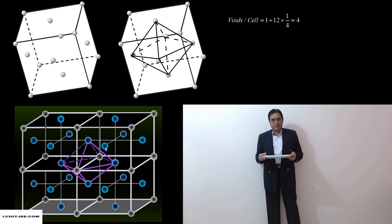However, if you look at any void located at the edge, it is shared by four unit cells. So for a particular unit cell, its contribution will be one-fourth. And there are twelve such octahedral voids, so twelve multiplied by one-fourth is three. And three plus one is four.